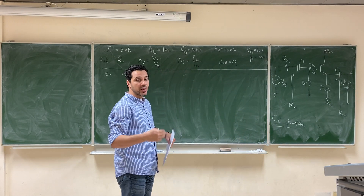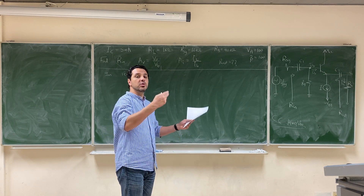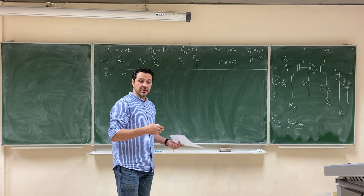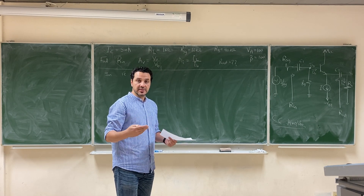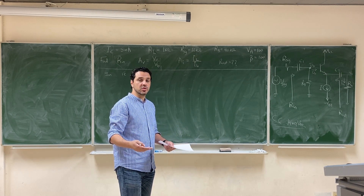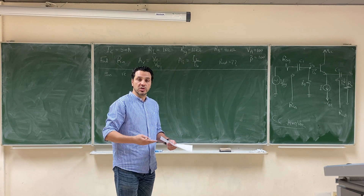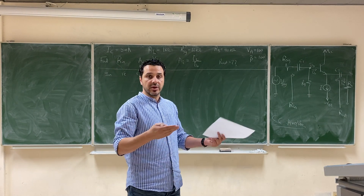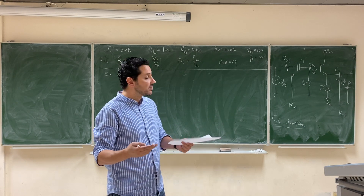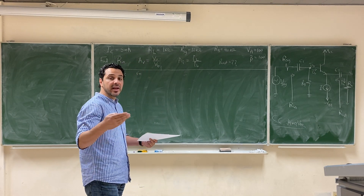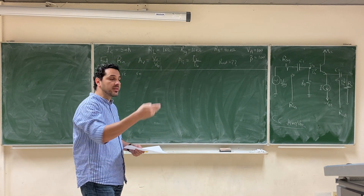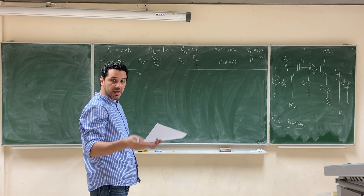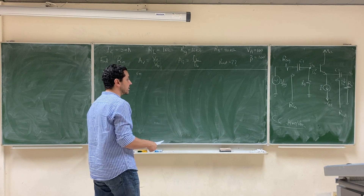After we finish the problem, ask yourself: what if we use the other model? Try to solve the same problem using the other model and see if you get the same solution. See how difficult the solution will be — it might be of the same difficulty. As a training exercise, try to solve the problem using the T-model. We will try to solve it using the pi model and try to reach the same result.